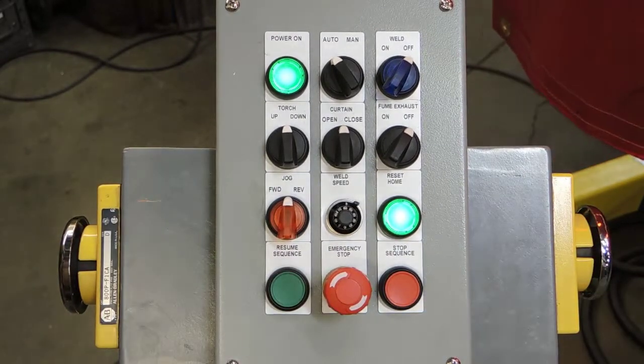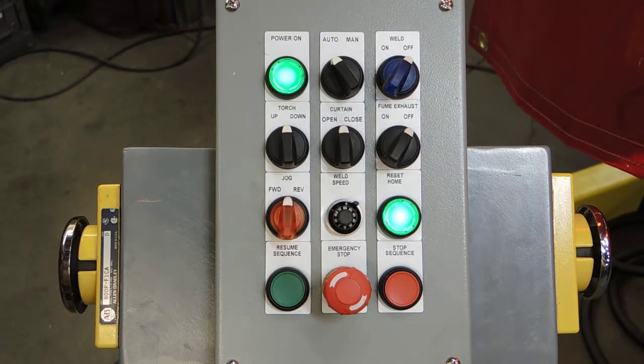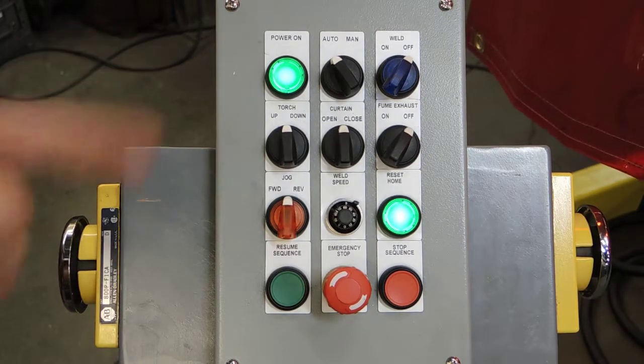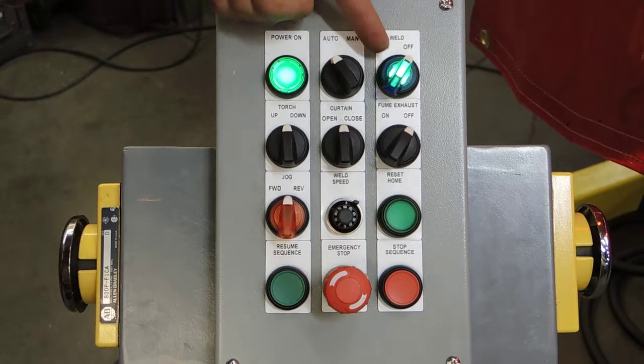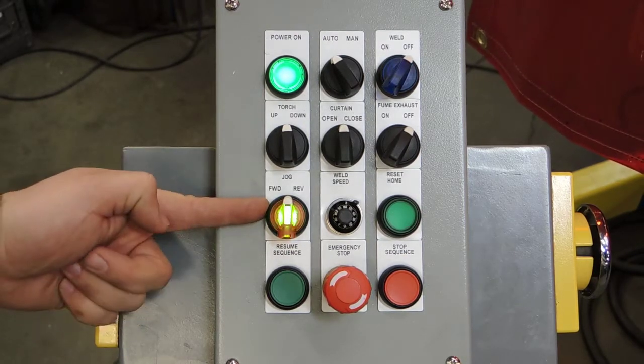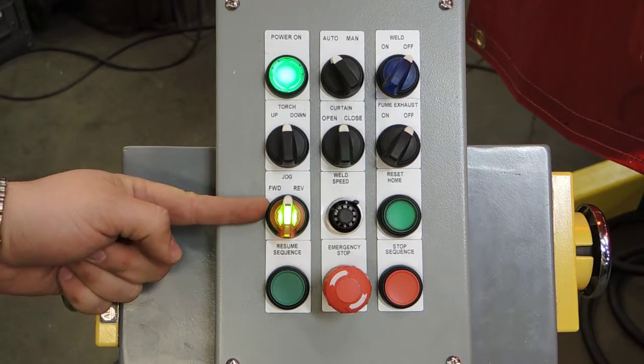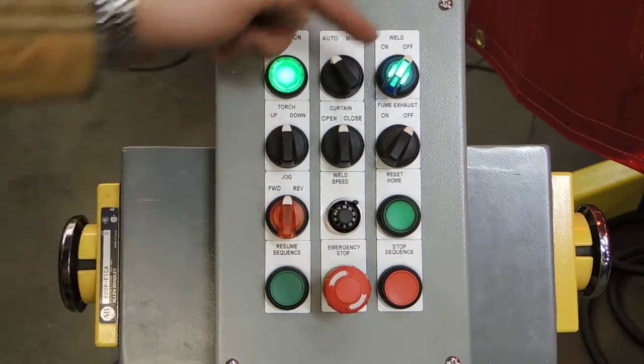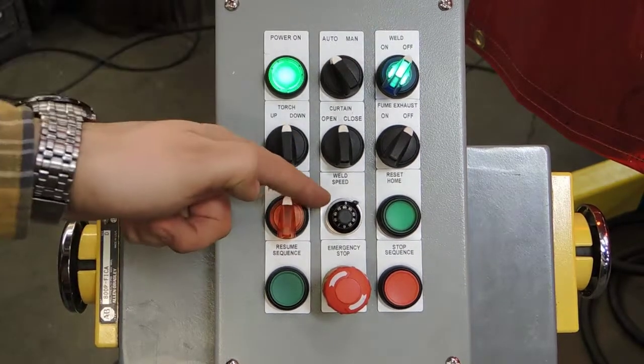Once closed completely, the sequence is started, and we can determine based on this button lighting up when a weld would be taking place. Right now we're rapid traveling to the next position, and once there, we are welding and traveling at our weld speed.